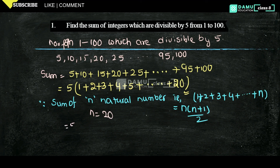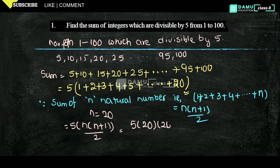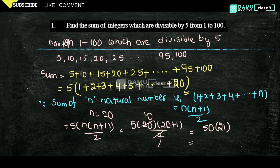So the sum is 5 into n into (n plus 1) by 2, that is 5 into 20 into (20 plus 1) by 2. Simplifying: 2 cancels with 20 to give 10, so 5 into 10 into 21 equals 50 into 21. Therefore the final sum equals 1050.